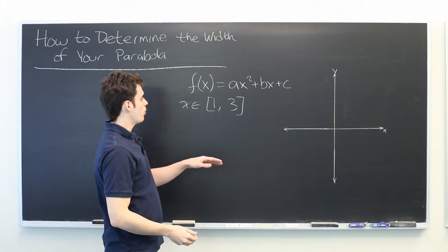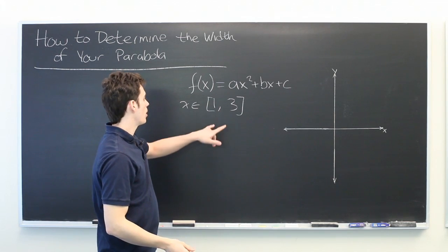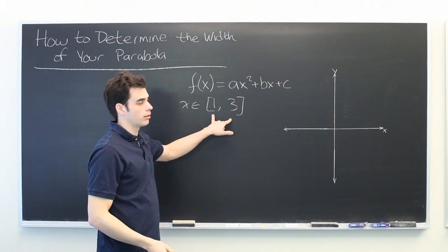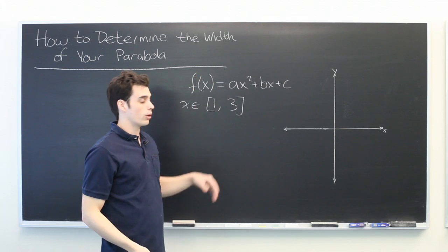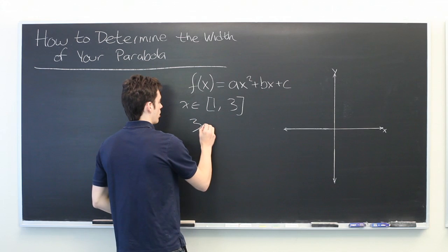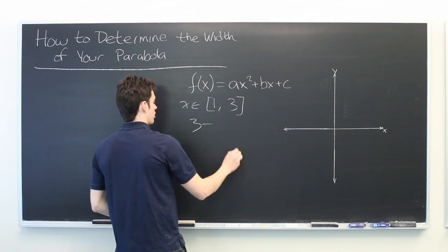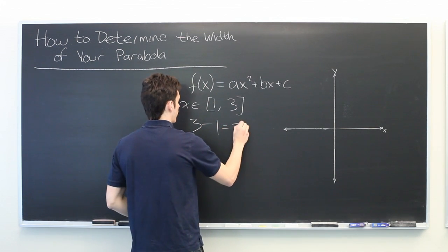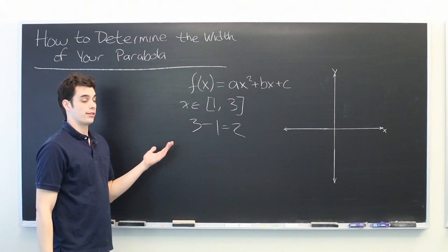Well, the width of the parabola is simply the width of the interval on which it's defined. It doesn't even matter what the coefficients are. We simply take one endpoint of our domain, subtract the other, and we get that the width is 2.